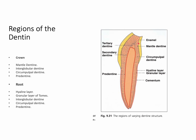The mantle dentine is the first layer of dentine seen under the dentine-enamel junction. The interglobular dentine is the globular layer lying immediately under it in the crown and in the root. In the root, before we see the interglobular layer, we will see a layer called the granular layer of Tomes. The circumpulpal dentine forms the bulk of the dentine, and the predentine is the first layer of dentine that forms above the pulp.